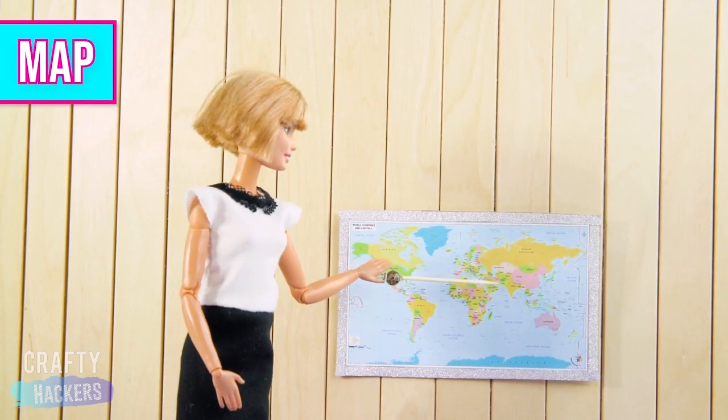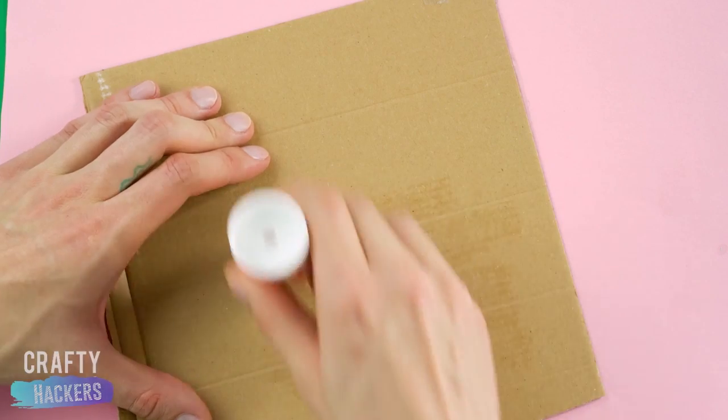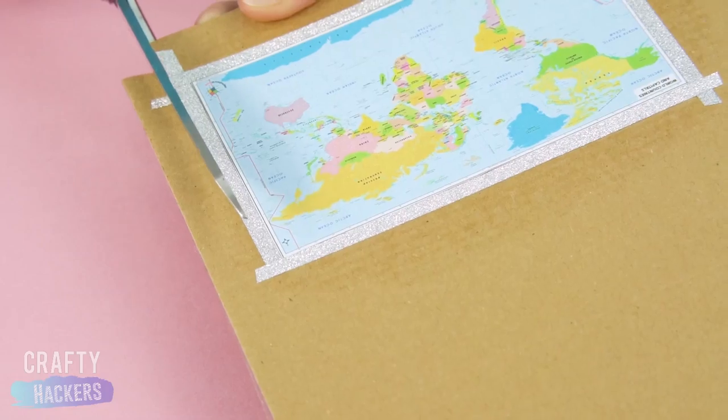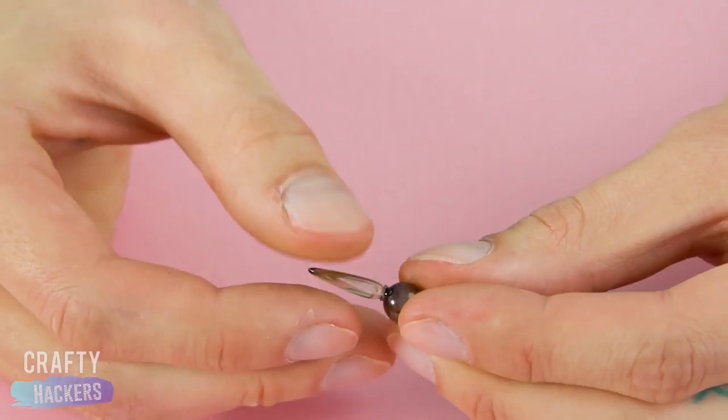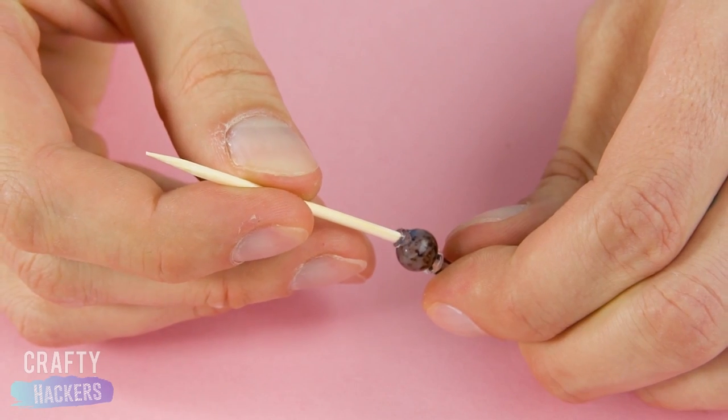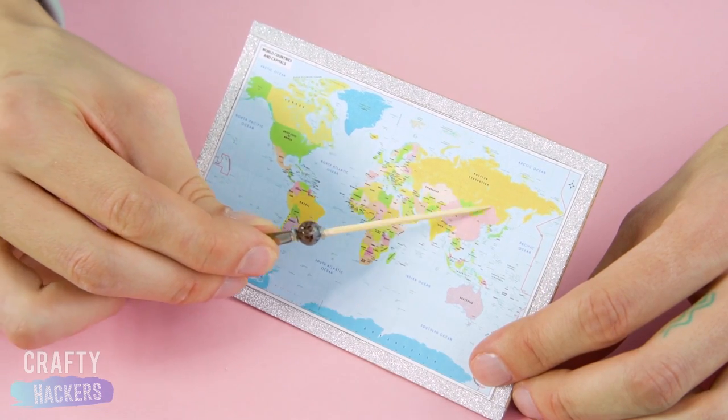Map! Help Barbie learn geography with this map of the world. First, print out a small map and cut it out. Glue it to a piece of cardboard and give it a sparkly border with glitter paper. Next, glue two jewelry beads together to make a pointer. Clip the end off a toothpick and glue it to the beads. Now Barbie can point out all the places where she wants to travel.